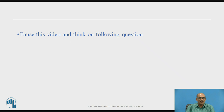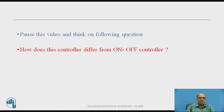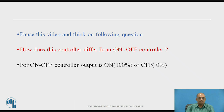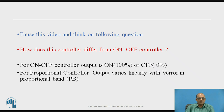Now pause this video and think about the following question: how does this controller differ from an on-off controller? Basically, in an on-off controller, the controller output is either on or off. When the controller output is on, it is 100%, and when it is off, 0% power is delivered to the load. For the proportional controller, the output varies linearly with phi_error — that is, the error voltage — within the proportional band.